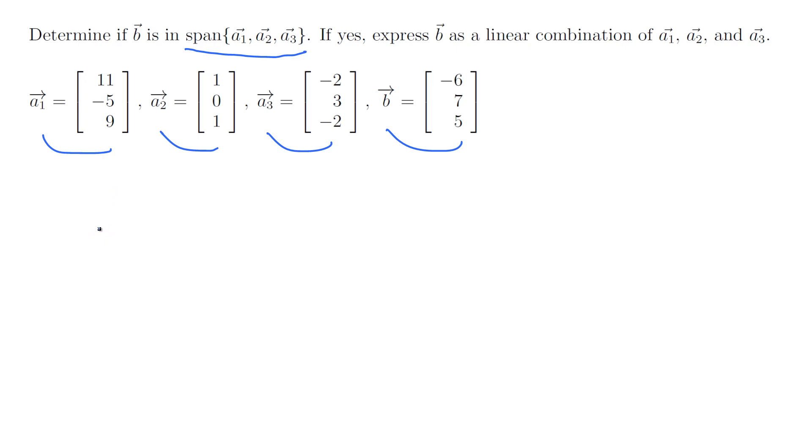a1 is [11, -5, 9]. I want to write down a2 first because [1, 0, 1] helps us work faster. Then go for [-2, 3, -2]. We wrote a2, a3, a1. Now B, which is [-6, 7, 5]. Here is a pivot, we got 0, 3. This is a pivot element.